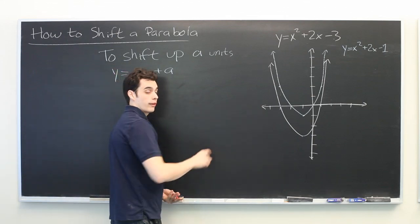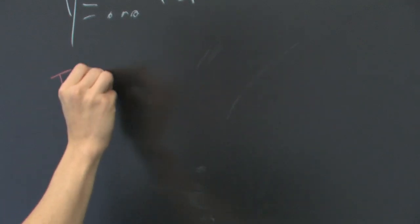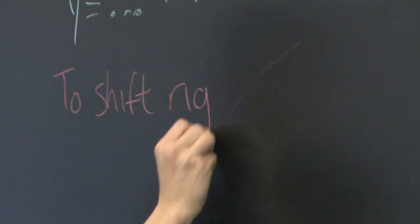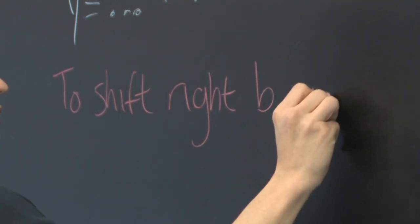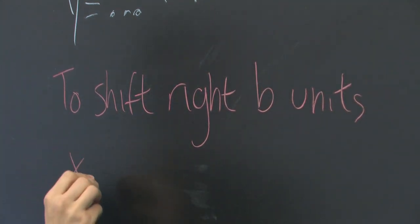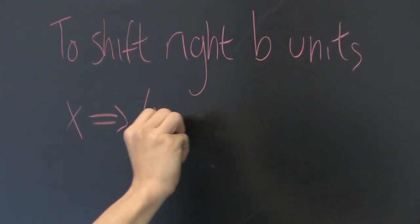But how about shifting to the left or right? Let's say you want to shift to the right by b units. What you want to do is replace all instances of x with x minus b.